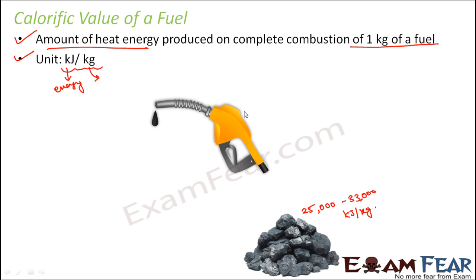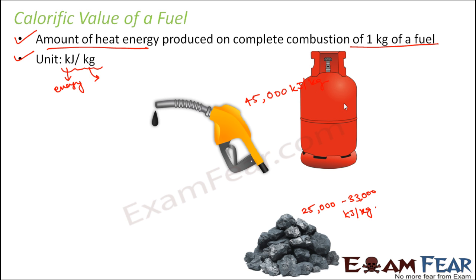In the case of petrol, it is 45,000 kilojoules per kg. Now since we have specific values, it becomes much easier to decide which is a better fuel in terms of energy produced. Out of these fuels, the highest calorific value is that of LPG, so LPG is a better fuel than petrol or coal in terms of calorific value.